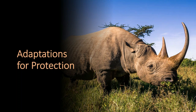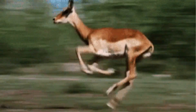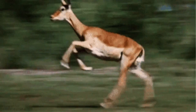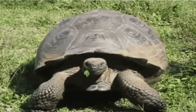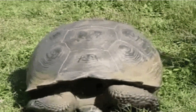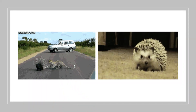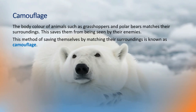Animals also need to adapt to protect themselves from being harmed or hunted by other animals. Rhinoceros and buffaloes have horns to keep away their enemies. Deer run very fast to save themselves from lions and tigers. The huge size of an elephant and a hippopotamus scares away their enemies. Tortoises and snails have hard shells on their body. They go into their shells when faced with danger. Porcupines and hedgehogs have sharp spines that save them from their enemies. The body color of animals such as grasshoppers and polar bears matches their surroundings. This helps them from being seen by their enemies. This method of saving themselves by matching their surroundings is known as camouflage.